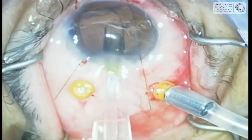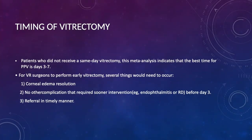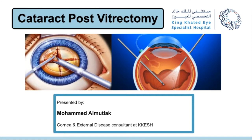Going back to the first case, this was the ideal situation — the VR surgeon was in the OR, came and took the lens out, and placed a sulcus IOL at the same time. The largest meta-analysis showed that for patients who did not receive same-day vitrectomy, PPV done in the three-to-seven day period was associated with the best outcomes, but this also has to be in the setting of good visualization. If you have an intact anterior capsule, always place a three-piece IOL there.